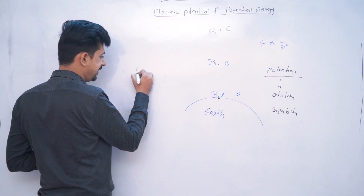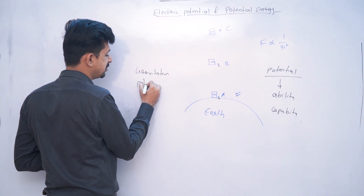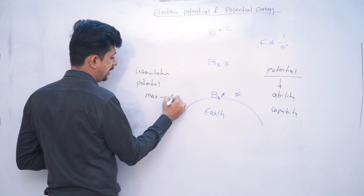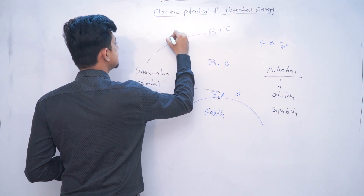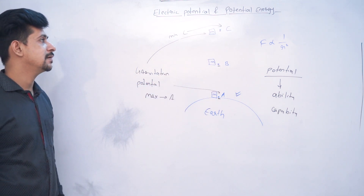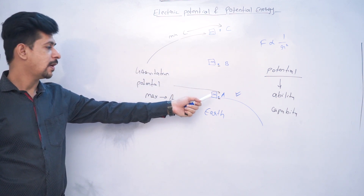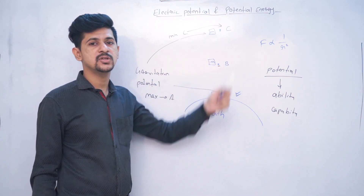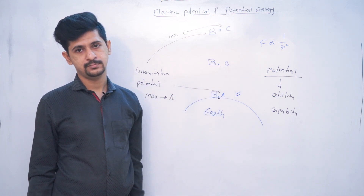So I will say that gravitational potential is maximum for A and minimum for C. The gravitational potential is least for C because the mass placed there experiences the least force — since it is placed far away. The potential of that point, i.e., its capability to produce force there, is the least.